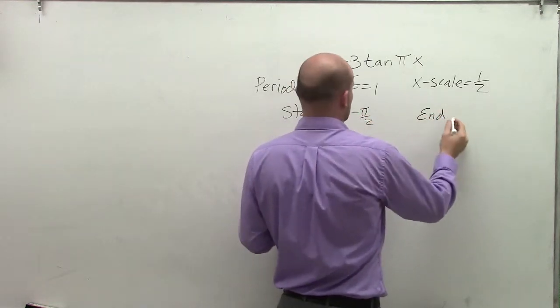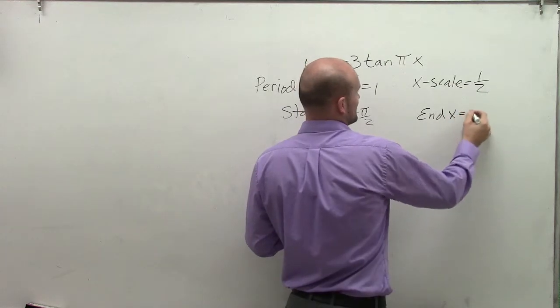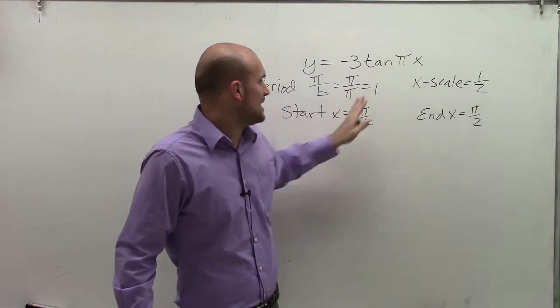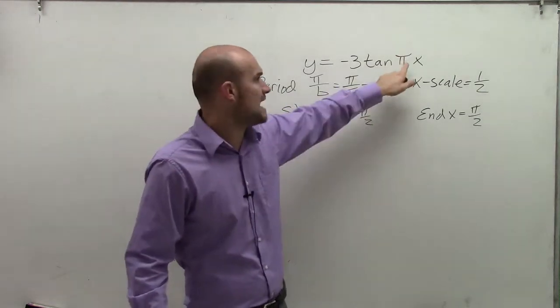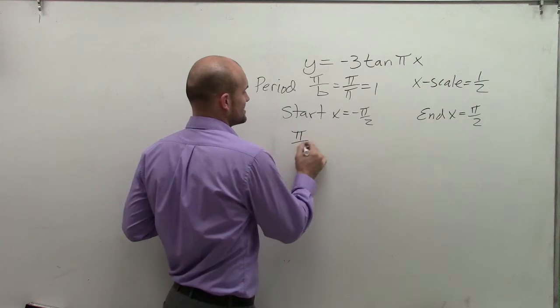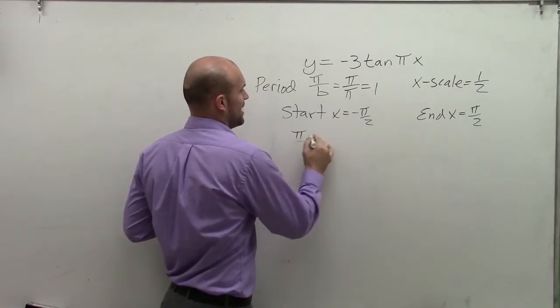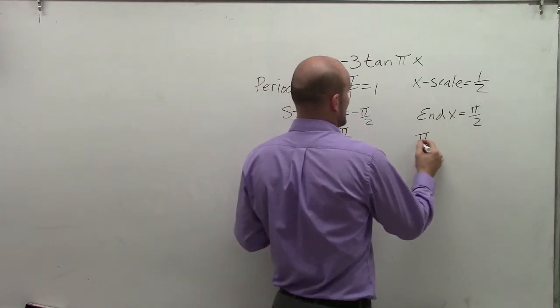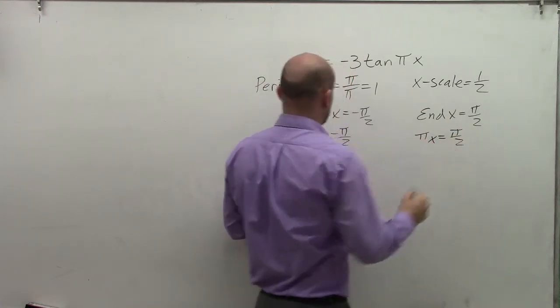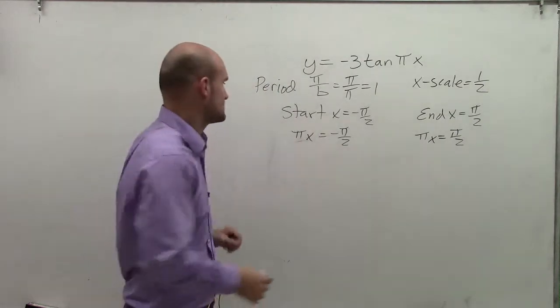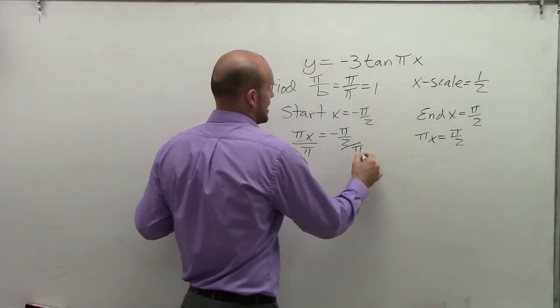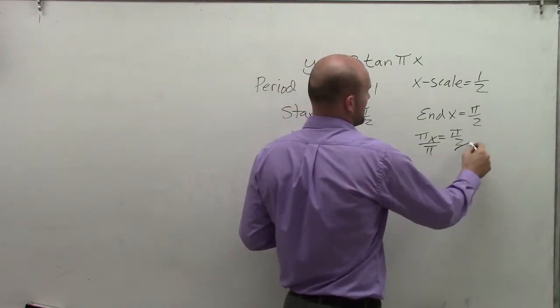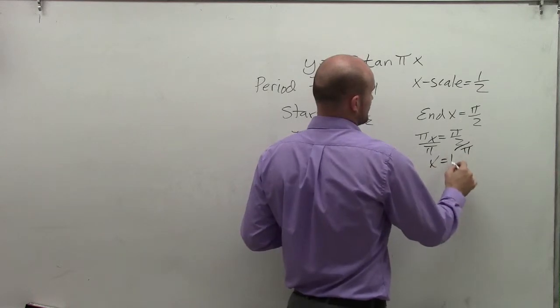The end is where x equals pi halves. However, my function is now not x like the parent graph, it's now pi x. So I'm going to set pi x equal to negative pi halves, and set my end pi x equal to positive pi halves. To solve for x, I divide by pi on both sides and get x equals negative 1 half. Here I divide by pi and get x equals 1 half.